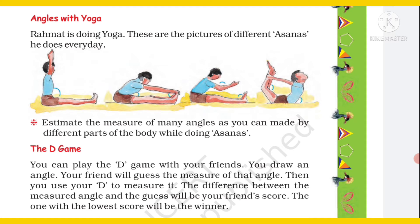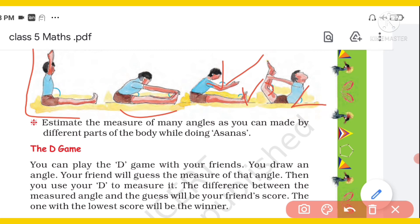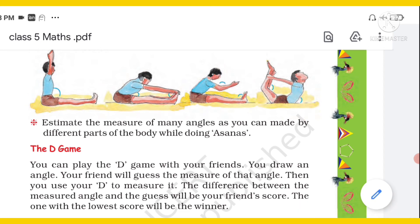These are pictures of different asanas that Rahmat does every day. You should all do yoga — it's very good for health. The first one shows a right angle — it looks like an L shape. The other two show acute angles, which are less than 90 degrees. Another one is slightly wider than L — that is an obtuse angle, more than 90 degrees. Some are acute angles because they are smaller.